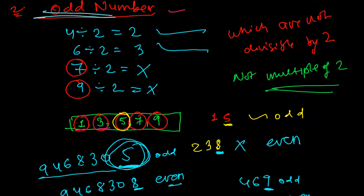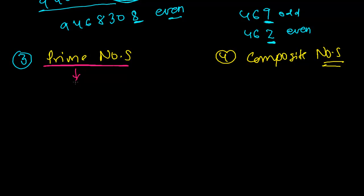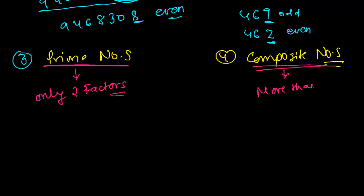Otherwise they are called odd numbers — if they end with 1, 3, 5, 7, or 9, any one of those digits, that will be called odd numbers. Now we need to learn what prime numbers are. Prime numbers are those numbers which have only 2 factors, and composite numbers are those numbers which have more than 2 factors. We have already discussed what factors and multiples are.